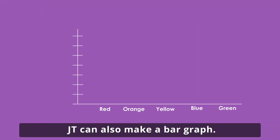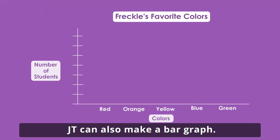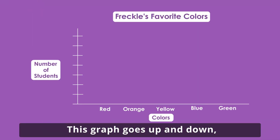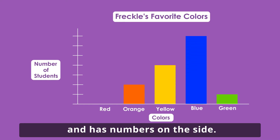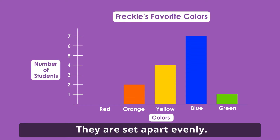JT can also make a bar graph. This graph goes up and down and has numbers on the side. They are set apart evenly.